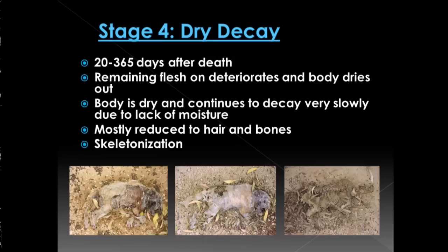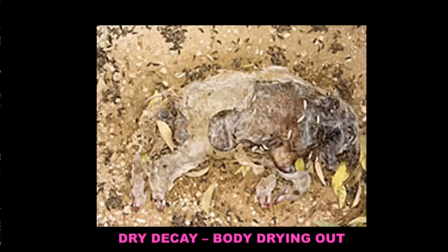At this stage, the corpse is mostly reduced to hair and bones, and later on we'll get full skeletonization of the remains. Here in our dry decay, the body is very much drying out. We see a lot of insect corpses, or pupae, all around the body — lots of stuff on this body — and that's because we see major insect recession.